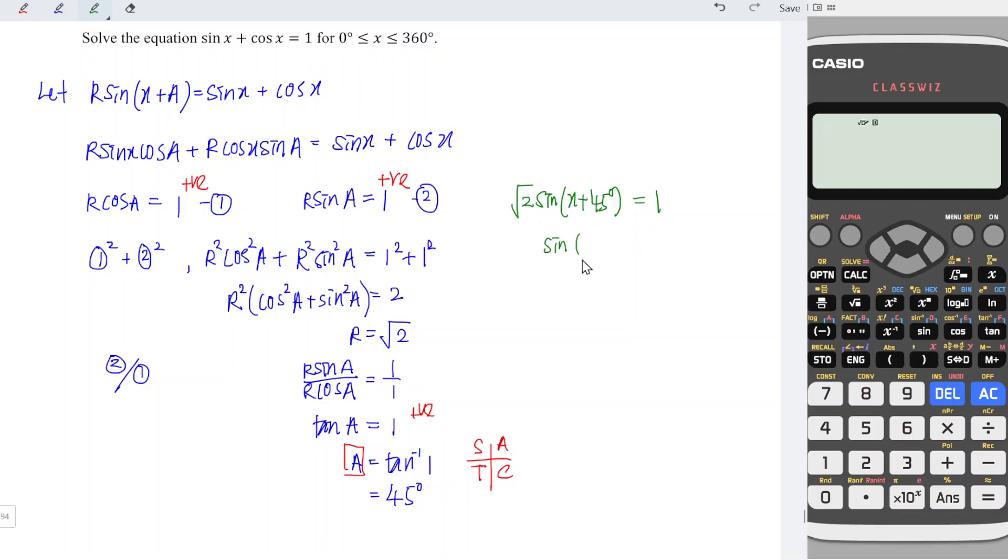So sin(x + 45°) = 1/√2, which means x + 45° = arcsin(1/√2).